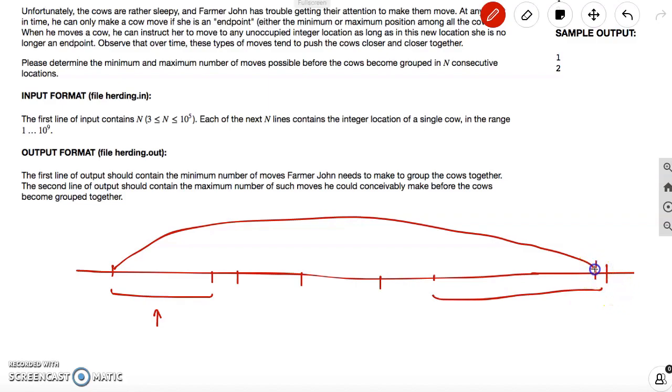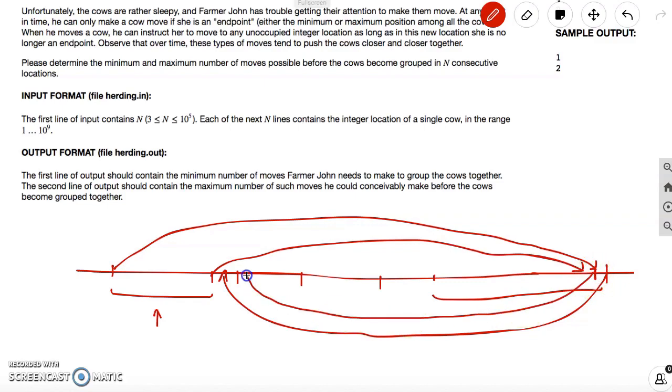Once this new thing is over here, we can move this one over here. And then we can move this cow over here. And we can continue moving first the rightmost endpoint to the leftmost open gap, and then the leftmost endpoint to the rightmost open gap.